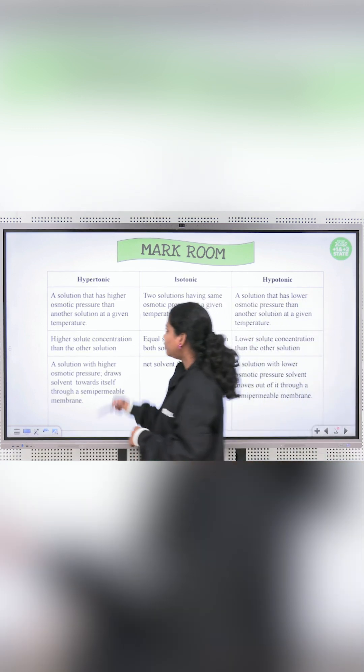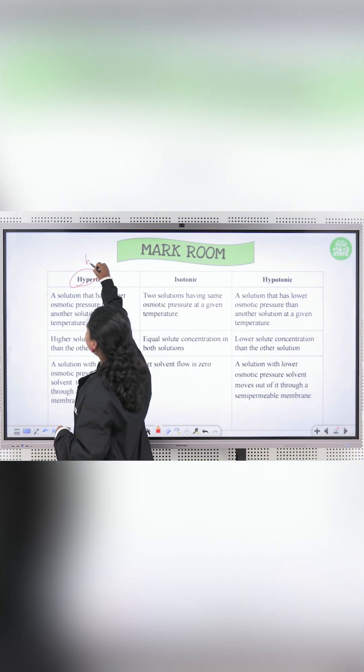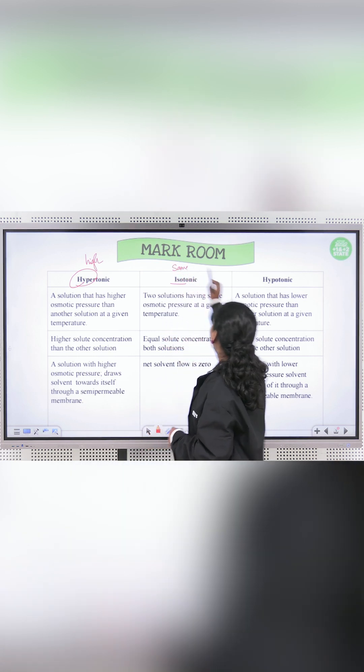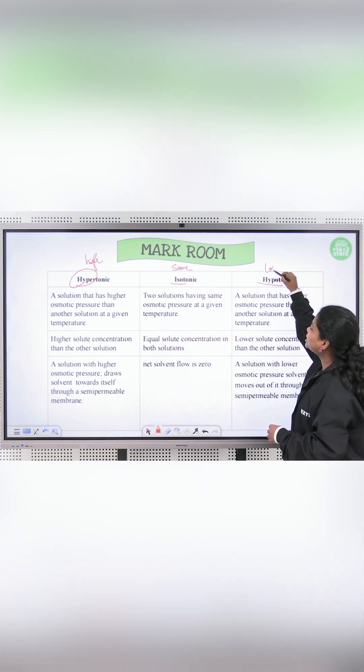First, let's understand the meaning of these words. Hyper means high, iso means same, and hypo means less.